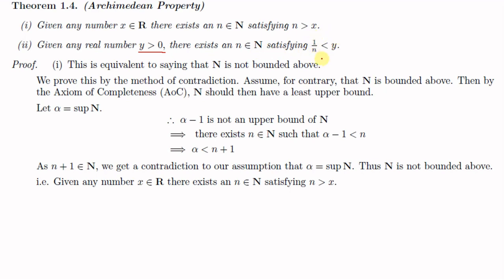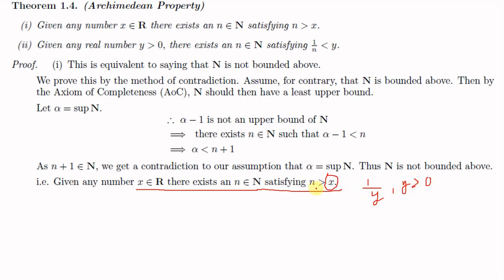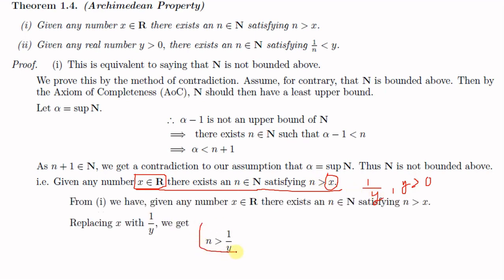To prove Part 2 — for y > 0 there exists n ∈ ℕ satisfying 1/n < y — we use Part 1. In Part 1 we have: for any x ∈ ℝ there exists n ∈ ℕ with n > x. Replace x with 1/y, where y > 0. We get: there exists n ∈ ℕ satisfying n > 1/y. Taking reciprocals (which reverses the inequality) gives 1/n < y for all real y > 0. This proves Part 2.